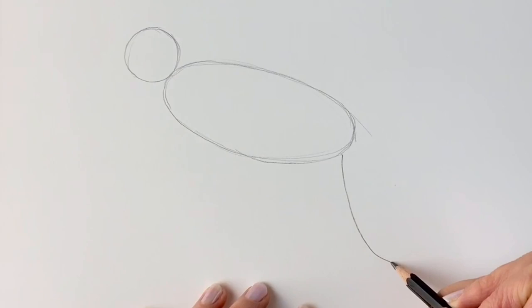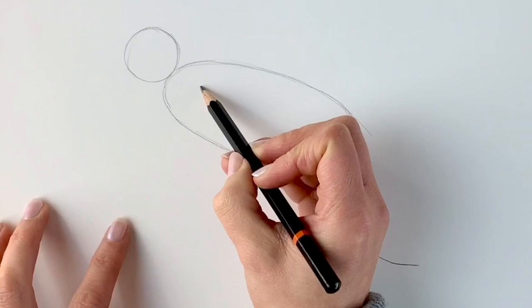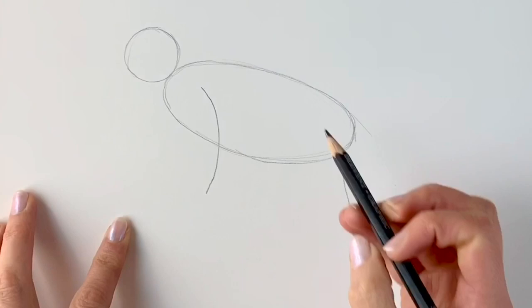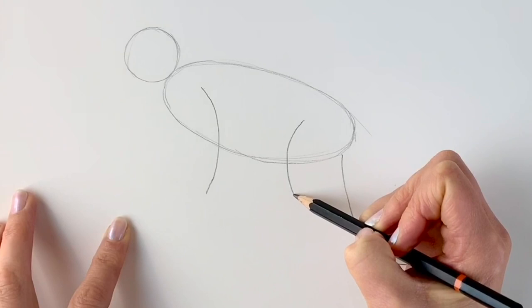We're then going to be drawing the front leg, so this is a curved line like that. And then the hind leg, which again is going to be a curved line. This comes a little bit lower and it has like a little bump in it.